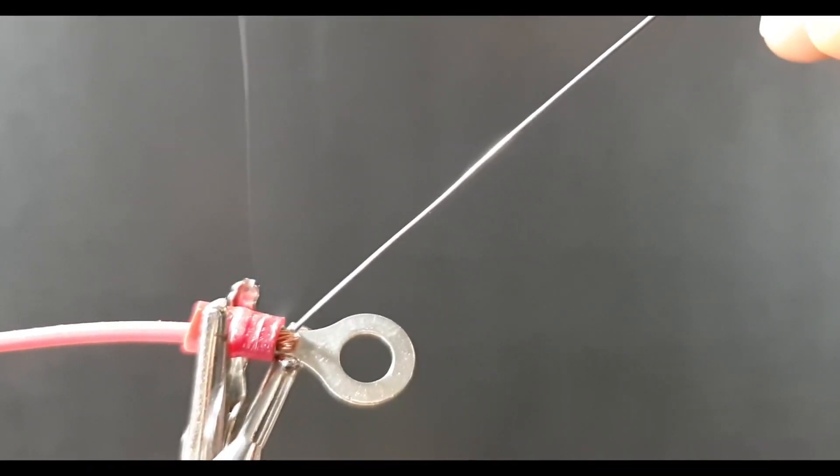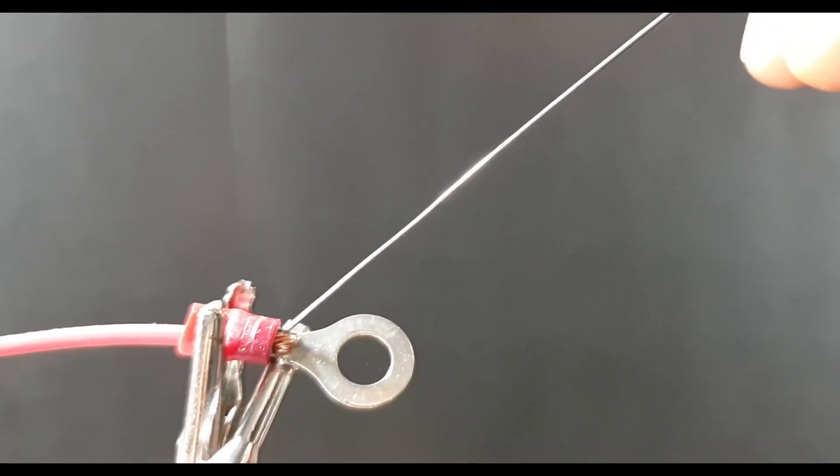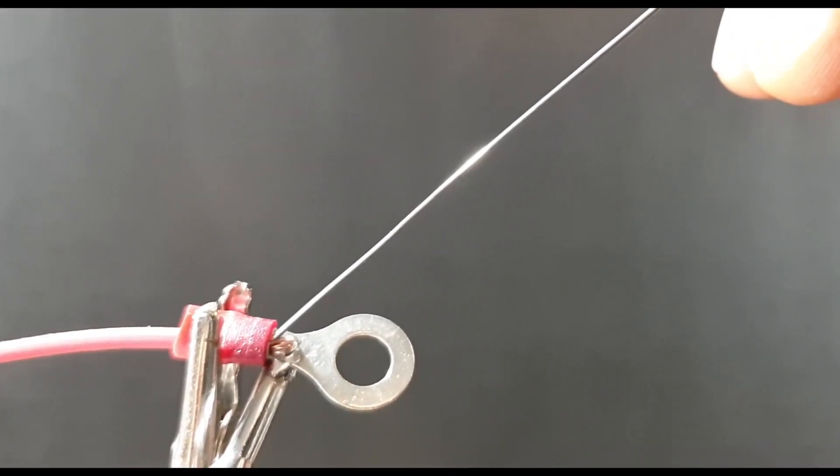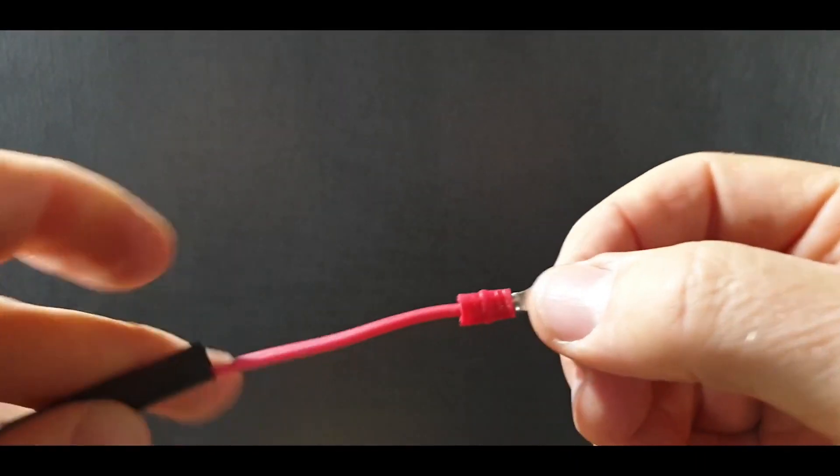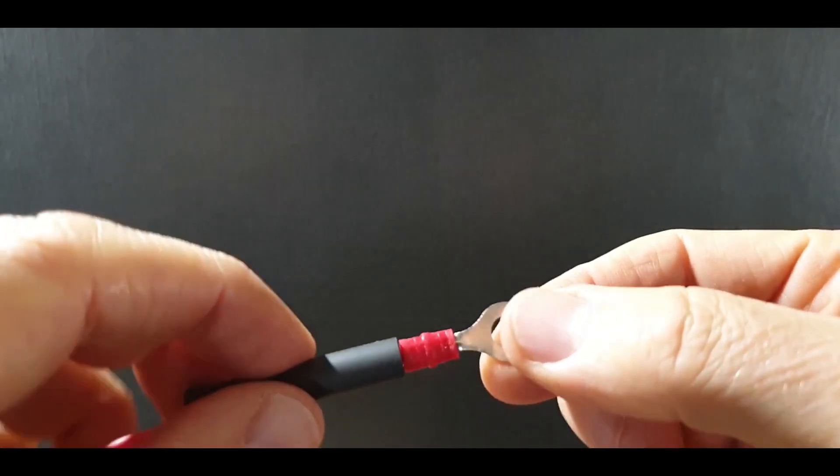And get this hot, run some solder in there, and what this is doing is waterproofing the actual core of the copper bit. Now the next step is make sure that you put your heat shrink on before you put this connector on.